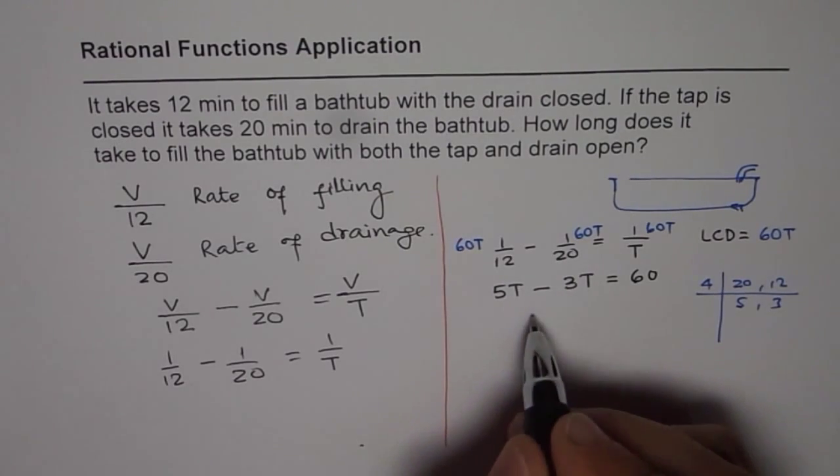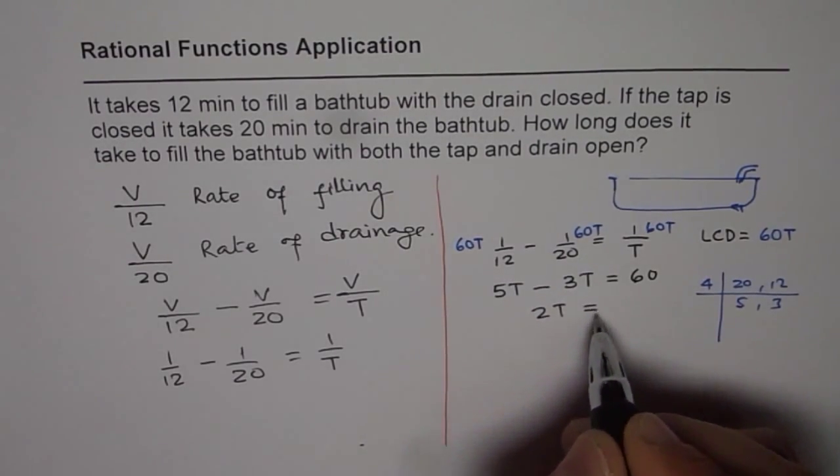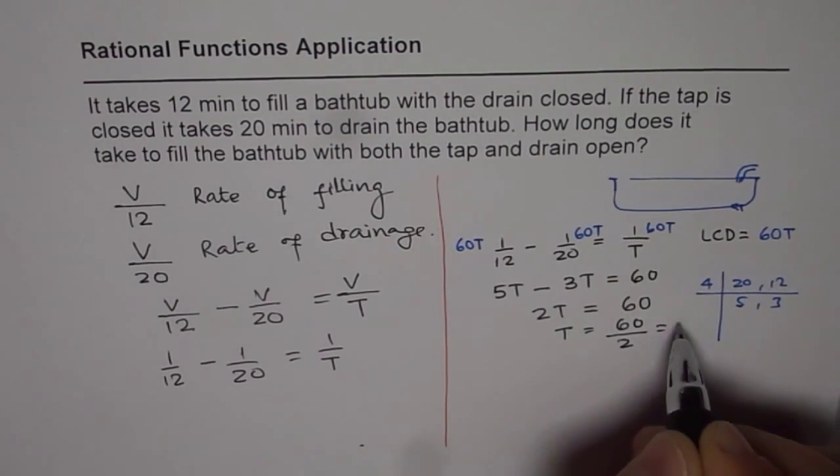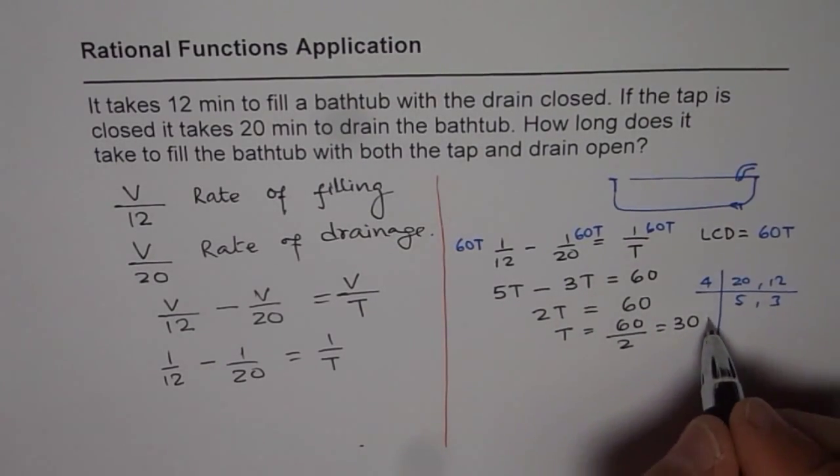5 minus 3 is 2, so 2T equals to 60 and T is equals to 60 divided by 2 or 30 minutes. So the answer is 30 minutes.